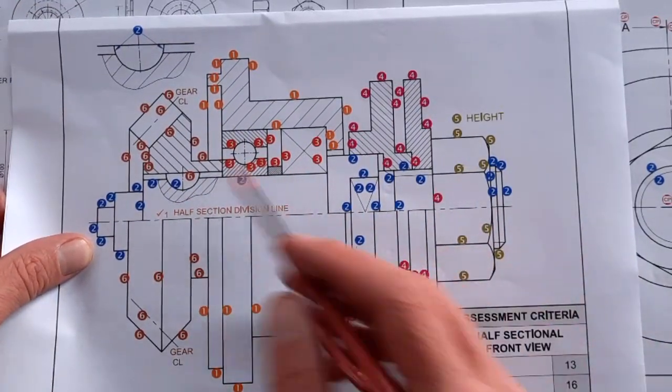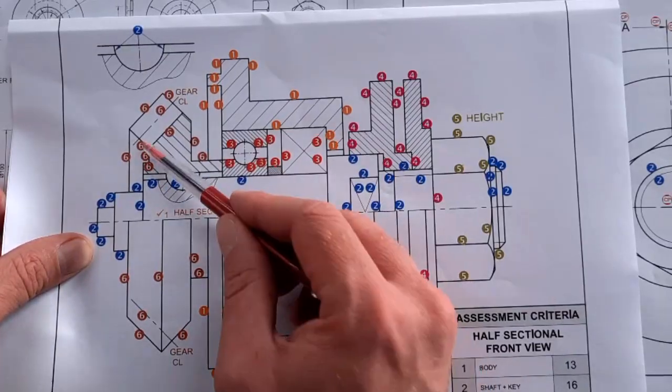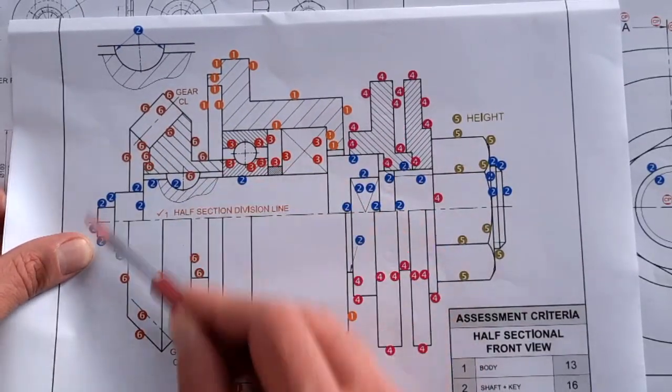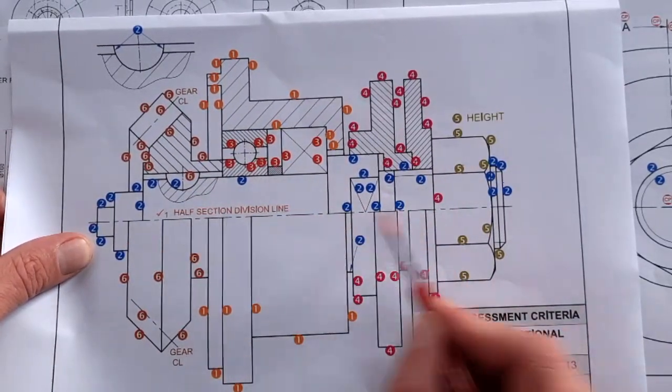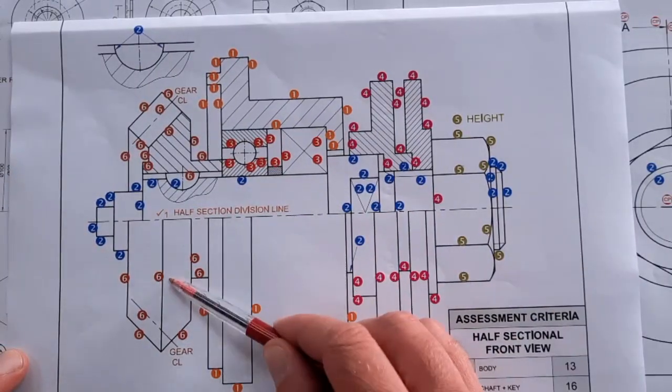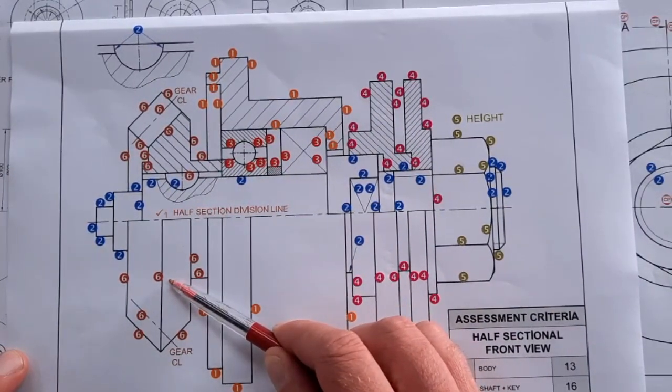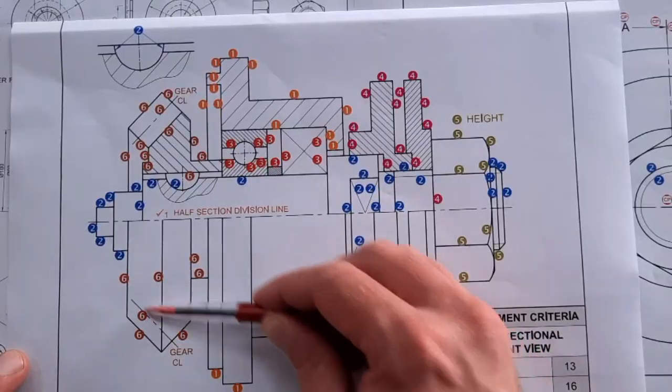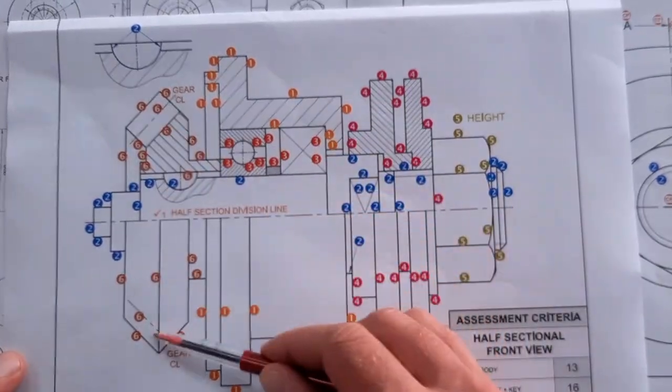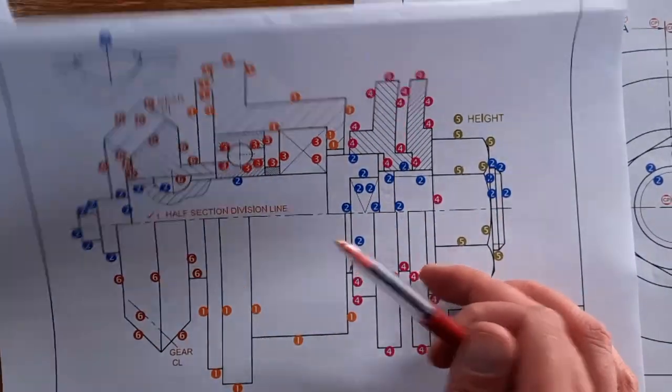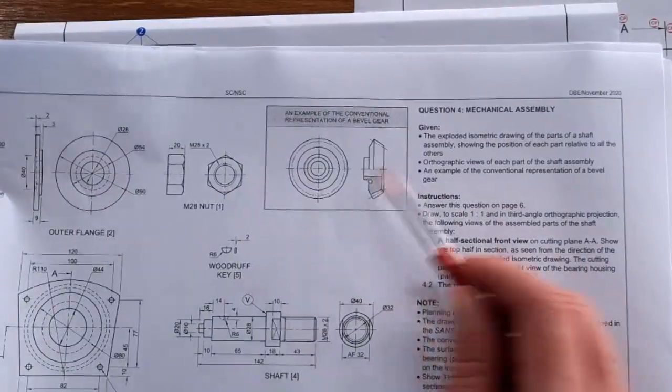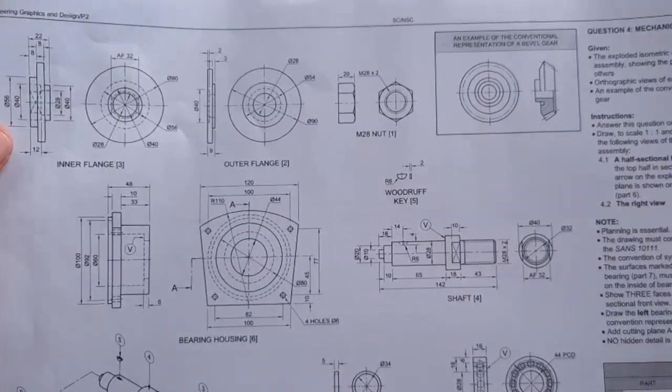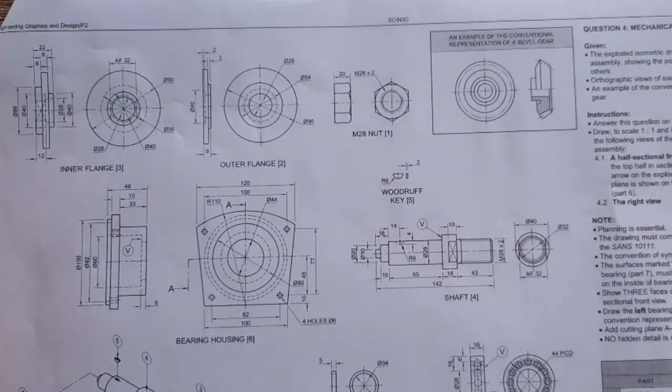Again, your half section division line is not a solid line. Make sure you get your partial sections correctly. Always remember any center lines must be added. Your conventional representation of that bevel gear is done in this way with your center lines that were actually given to you right here.